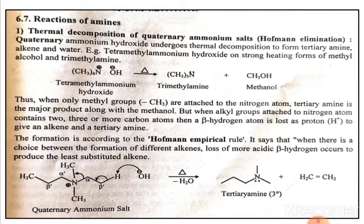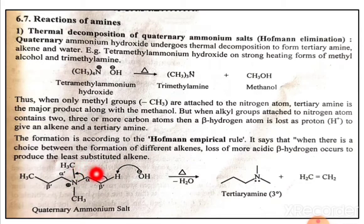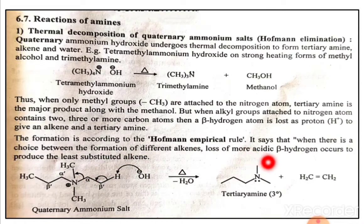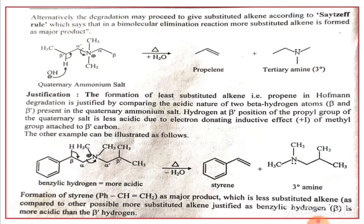In the first reaction, when nitrogen is directly joined to a methyl group, tertiary amine is the major product along with methanol. When nitrogen is joined to more than one carbon atom — such as CH2CH2CH3 — the base abstracts the proton and the group departs, giving tertiary amine plus alkene. Alternatively, the degradation may proceed according to the Saytzeff rule, which states that in a bimolecular elimination reaction the more substituted alkene is formed as the major product.